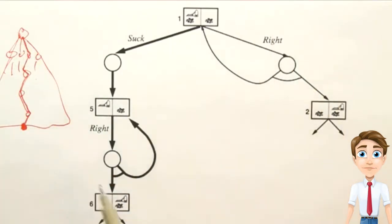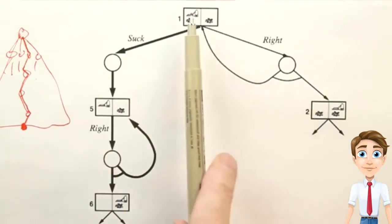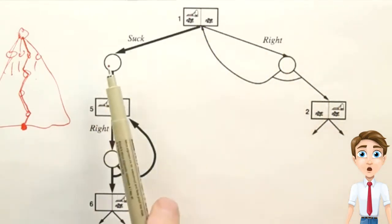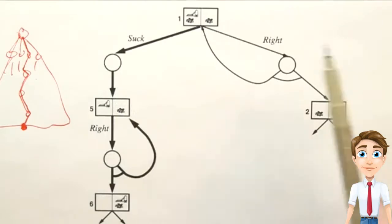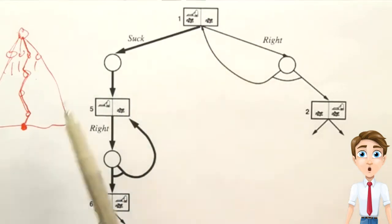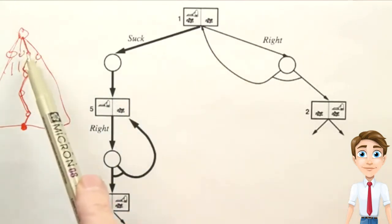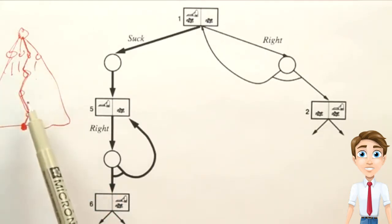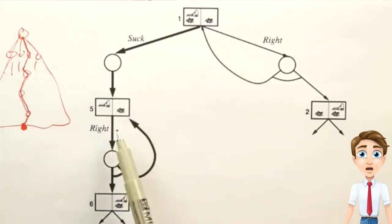So what we do is we search through this tree, we try right as a first action, we try suck as a first action, we keep out expanding nodes, until we find a portion of the tree, like this path is a portion of this search tree, we find that portion, which is a successful plan, according to the criteria of reaching the goal.